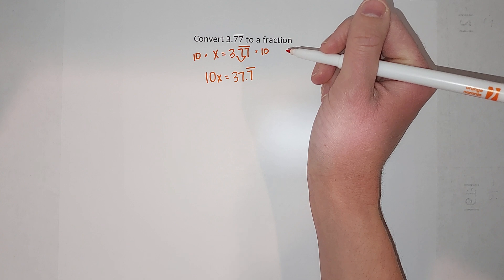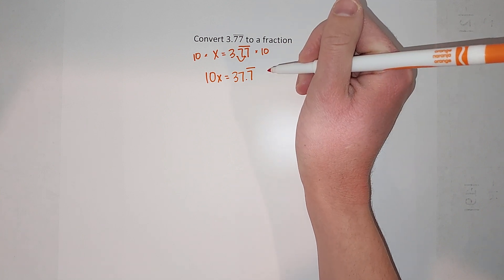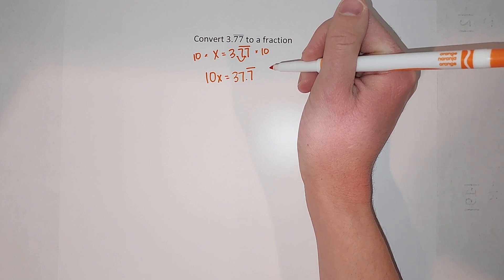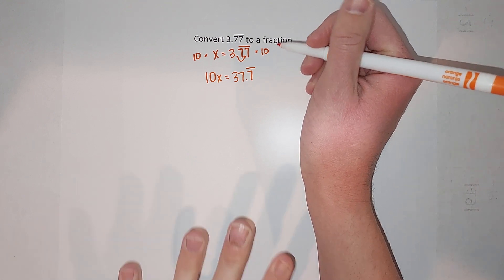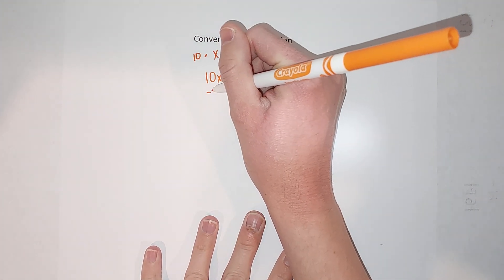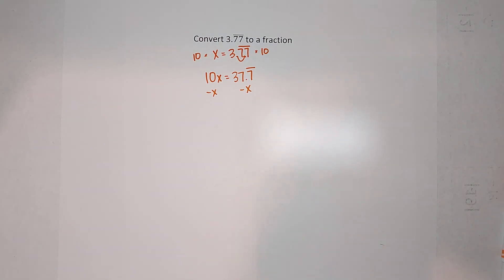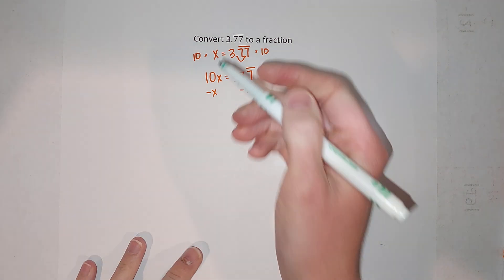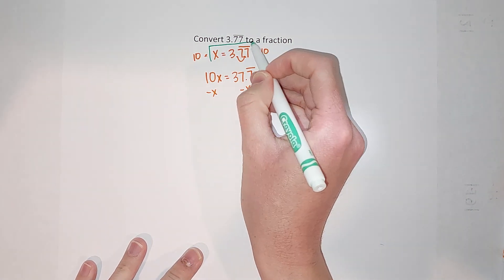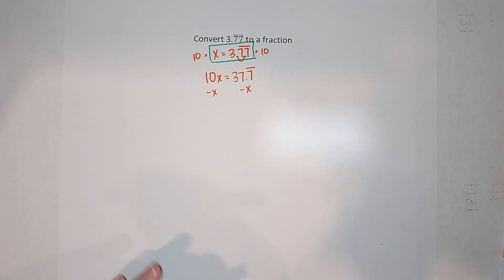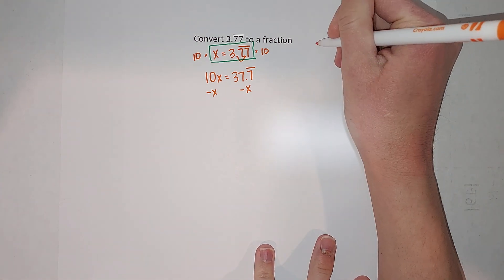Now what I'm going to do next is I'm going to subtract x from both sides. I'm subtracting x from both sides, but remember what did we set x equal to? We set it equal to 3.77 repeating, so x is 3.77 repeating.